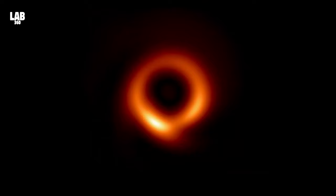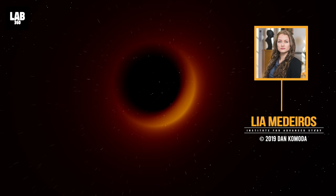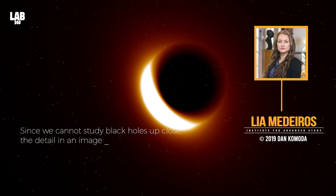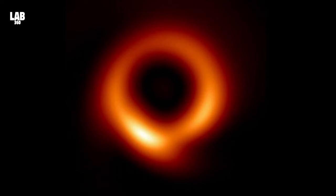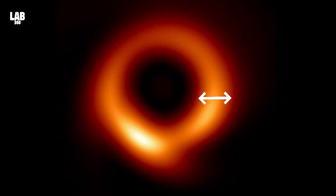As astrophysicist Liam A. DeRose of the Institute for Advanced Study and the EHT explains, since we cannot study black holes up close, the detail in an image plays a critical role in our ability to understand its behavior. The width of the ring in the image is now smaller by about a factor of two, which will be a powerful constraint for our theoretical models and tests of gravity.